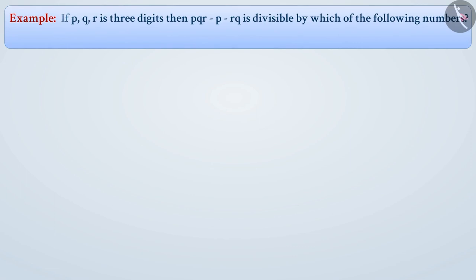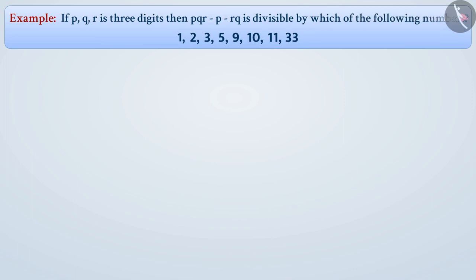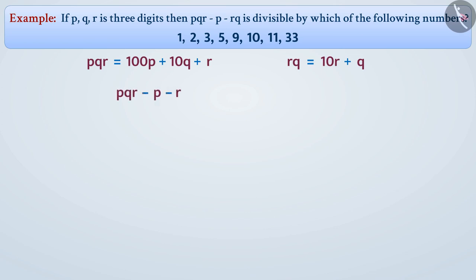Next example: if p, q, and r are digits of a three-digit number, then pqr minus p minus rq is divisible by which numbers? Here pqr equals 100p plus 10q plus r. Similarly, rq equals 10r plus q. So pqr minus p minus rq equals 100p plus 10q plus r minus p minus 10r plus q.